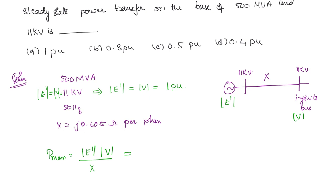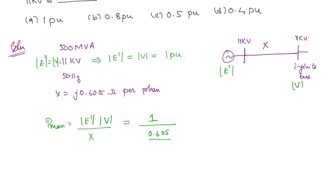X in per unit = actual value / base value = 0.605 × (MVA base / kV base²) = 0.605 × (500 / 11²) — but since it's per unit you don't need to worry about single-phase vs. three-phase. This gives X = 0.4 per unit. Therefore, P_max = (E × V) / X = (1 × 1) / 0.4 = 2.5 per unit.